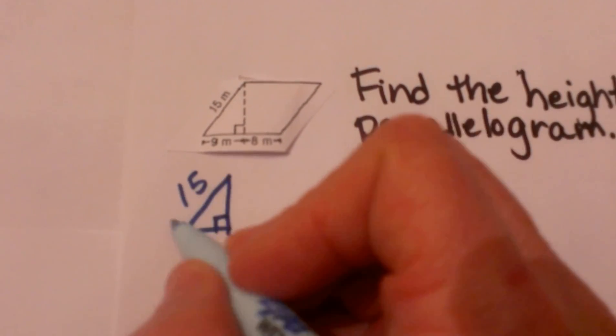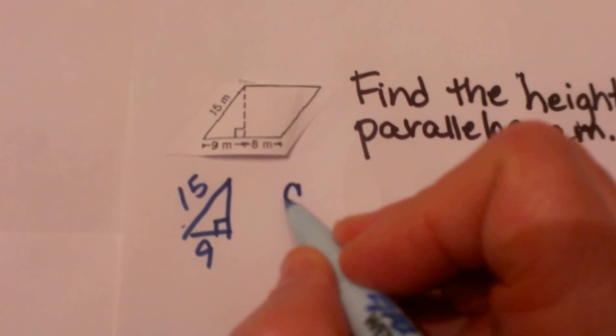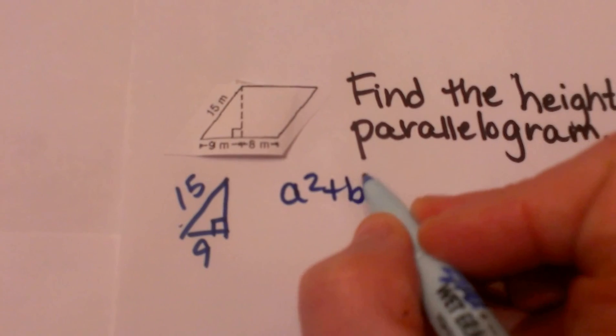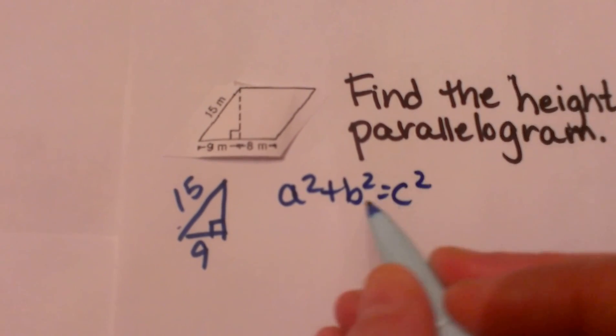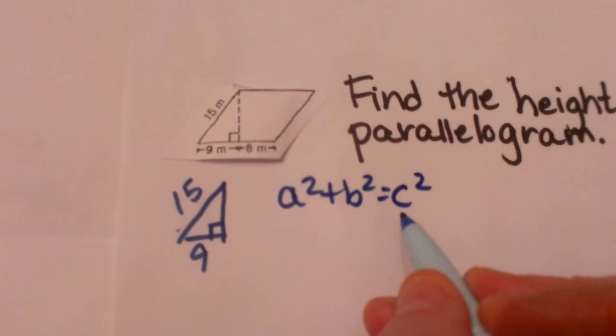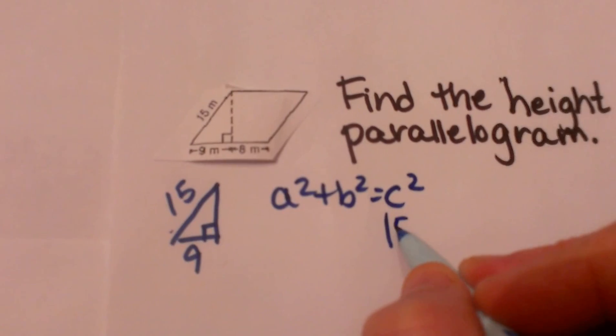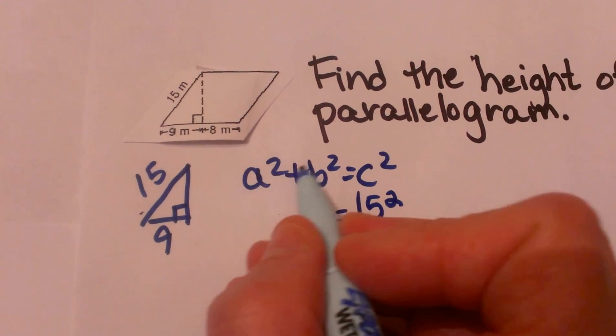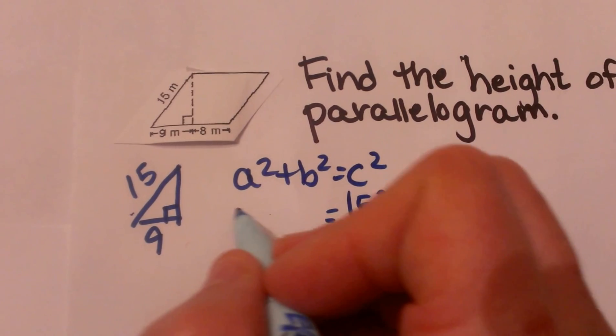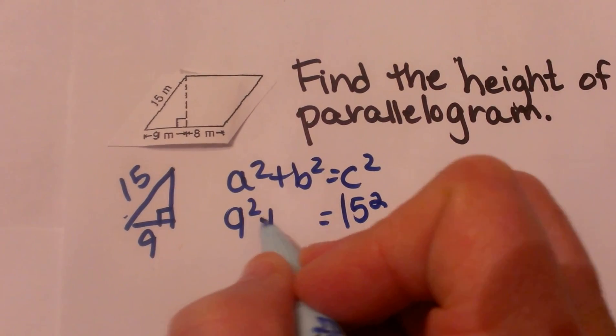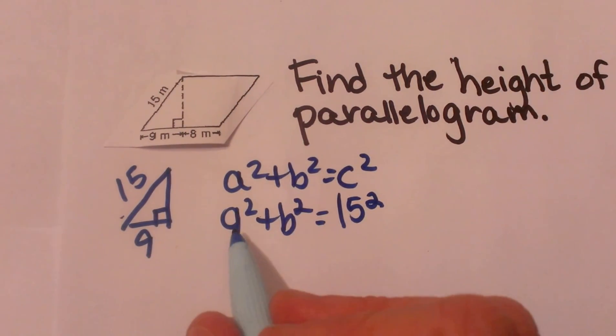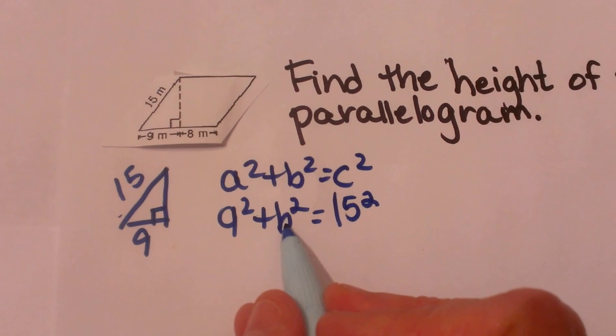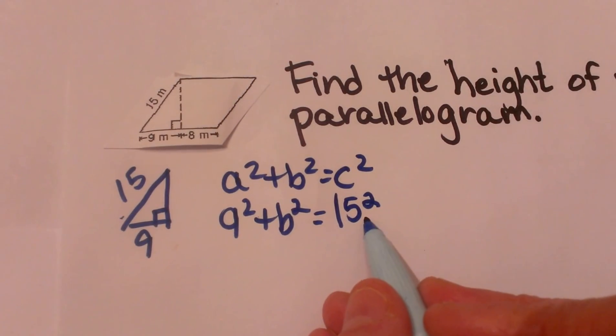Well this side is the hypotenuse. So remember in the Pythagorean theorem we have a squared plus b squared equals c squared. C is always the hypotenuse, so I'm going to plug in 15 for my hypotenuse. Now a and b are interchangeable so I can plug in 9 for a or b. I'll just plug it in for a and we will solve for b. So 9 squared plus b squared equals 15 squared.